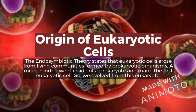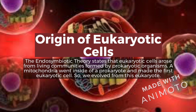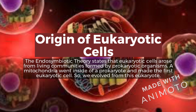Origin of eukaryotic cells: the Endosymbiotic theory states that eukaryotic cells arose from living communities formed by prokaryotic organisms. A mitochondria went inside of a prokaryote and made the first eukaryotic cell, and we ultimately evolved from this eukaryote.